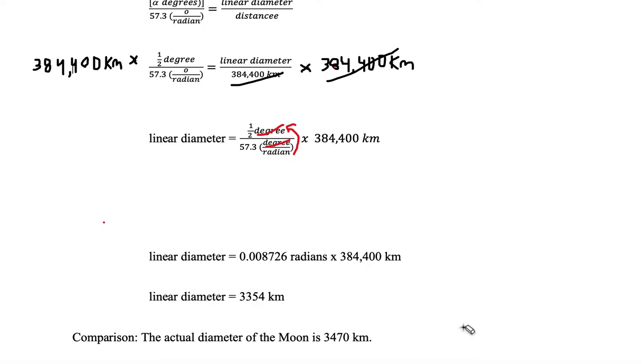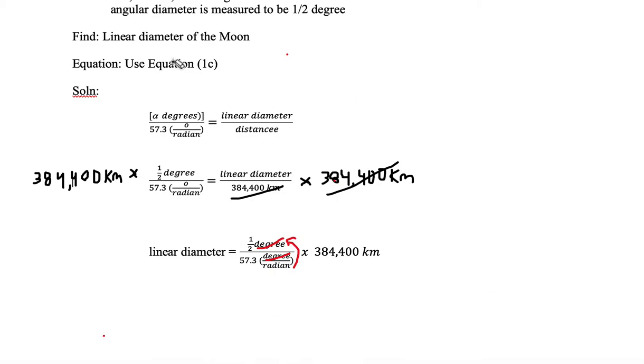How come we're not more accurate? The reason is because in the derivation of this equation we use the small angle approximation, which assumes the angle is extremely small such as an arc second or arc minute. But we're measuring in degrees because the Moon is so close to us.